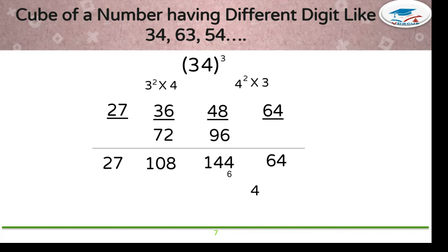144 plus 6 is 150. Write 0. Take 15 to 108. 108 plus 15 will become 123. Write 3. Take 12 to 27. 27 plus 12 is 39. So your answer is 39,304. Here is your answer. Now there is a homework.